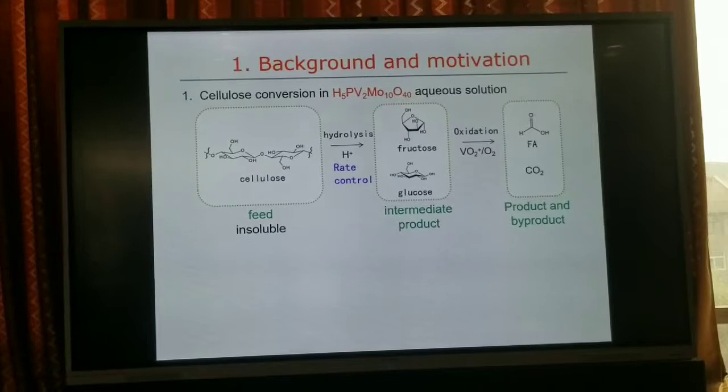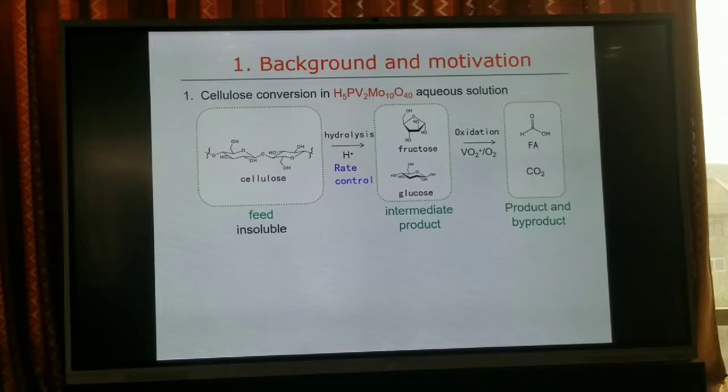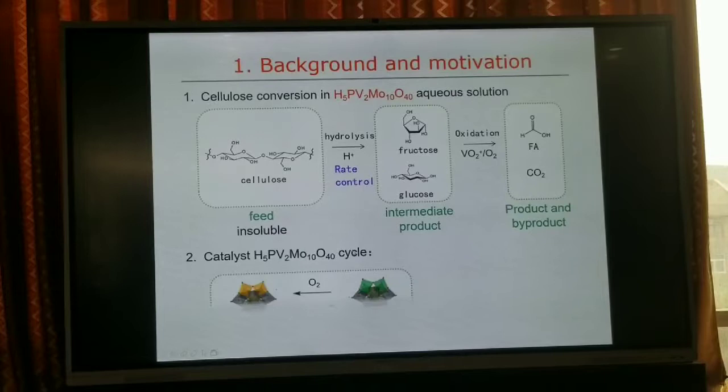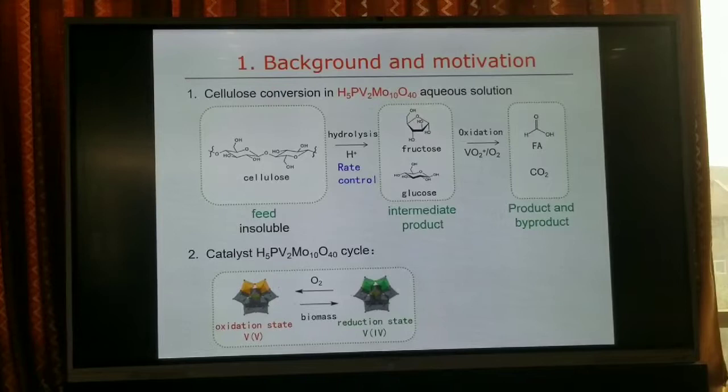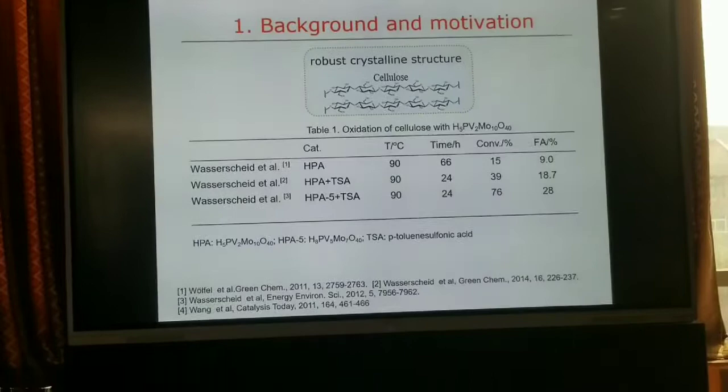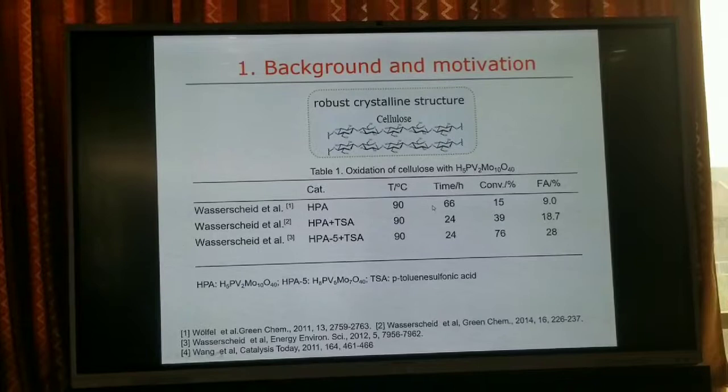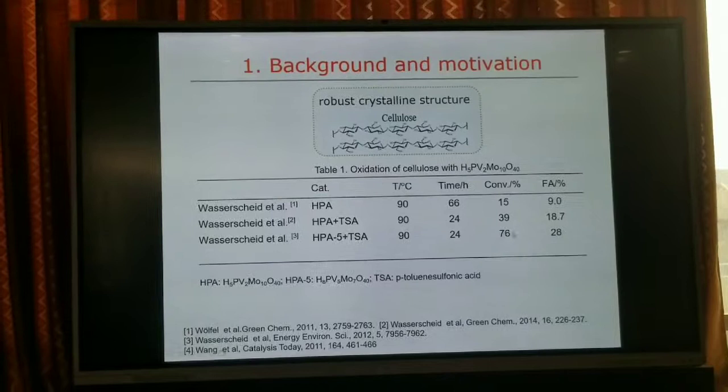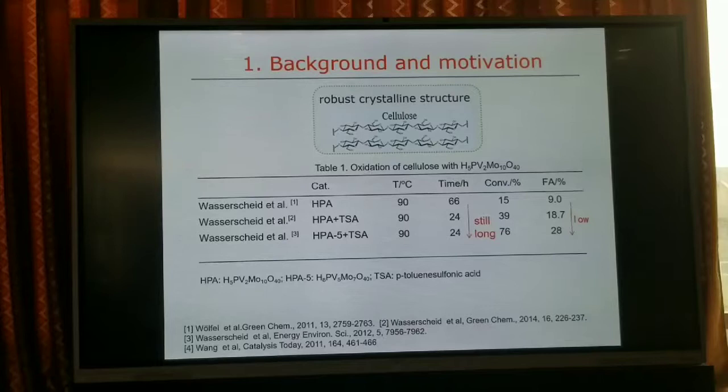In the literature, biomass is hydrolyzed through fructose and glucose, then oxidized to formic acid. Here the catalyst is a heteropolyacid. Because of the robust crystal structure of cellulose, the resulting yield ratio is low. We can see that it takes a long time for the conversion of cellulose to formic acid, and the yield is also very low.